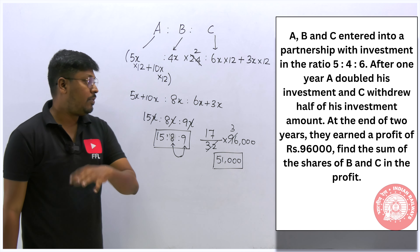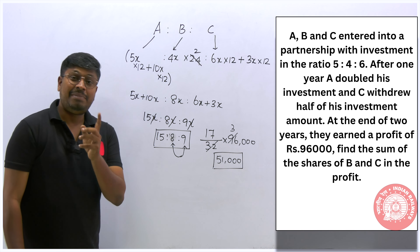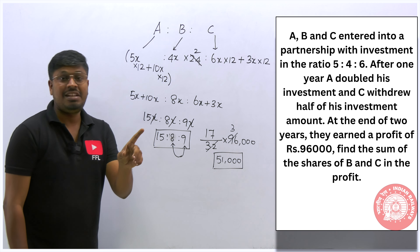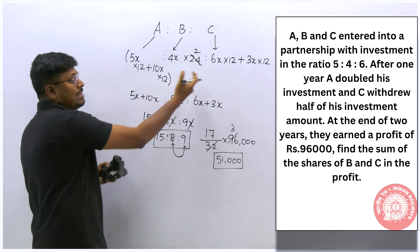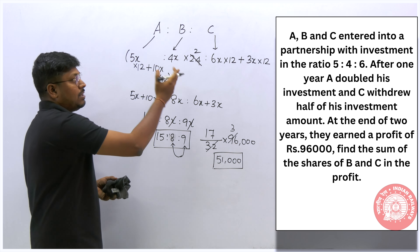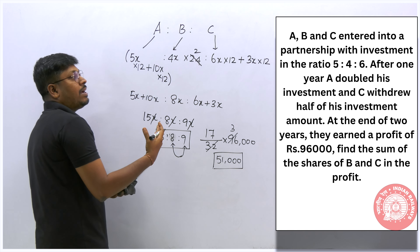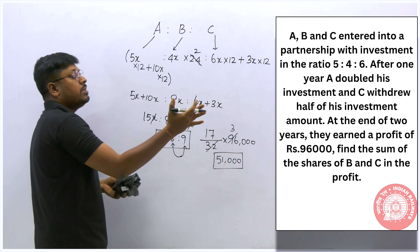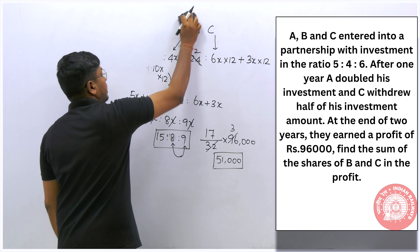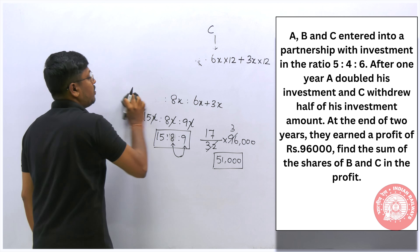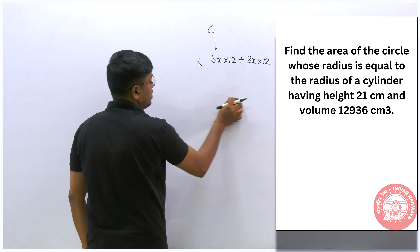So the answer is 51,000. Partnership is always easy. It plays a major role in railway as well as SSC exams. The key is to be careful about when a person withdraws or adds money and at which month, and multiply accordingly. Practice more partnership questions so you don't miss them in the exam.